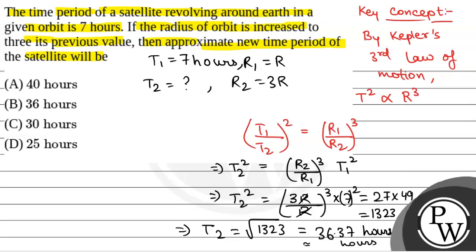So, the value of T2 will be equal to 36 hours which is option B. Hope you have understood it well. Best of luck.